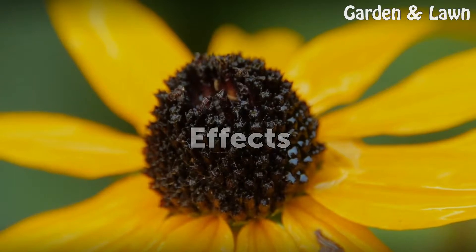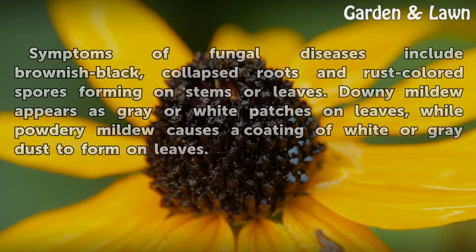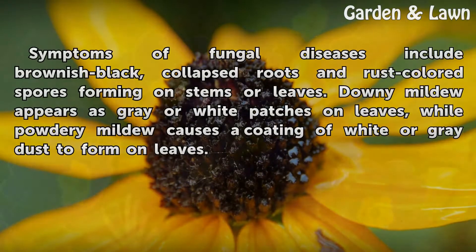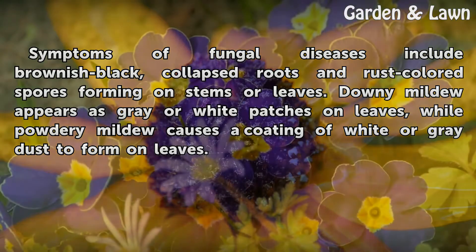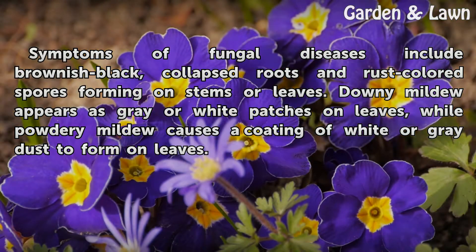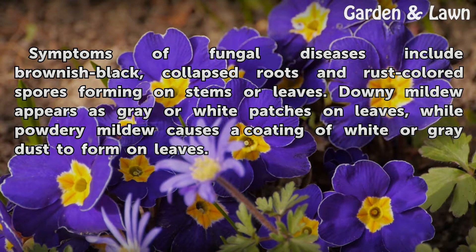Effects. Symptoms of fungal diseases include brownish-black, collapsed roots and rust-colored spores forming on stems or leaves. Downy mildew appears as gray or white patches on leaves, while powdery mildew causes a coating of white or gray dust to form on leaves.